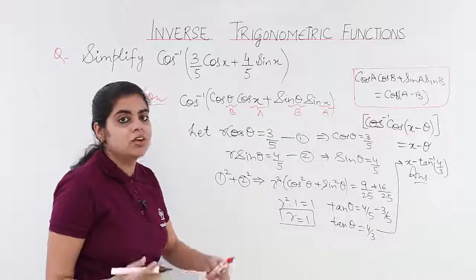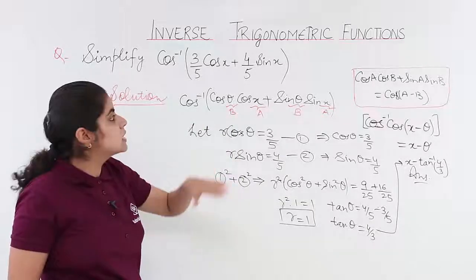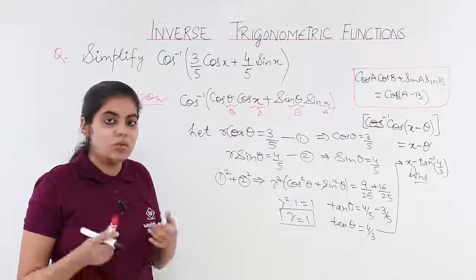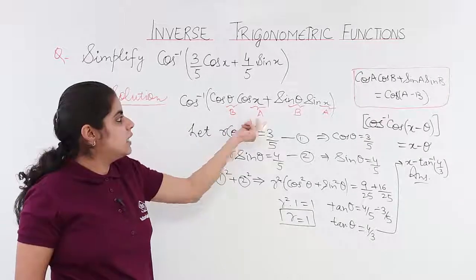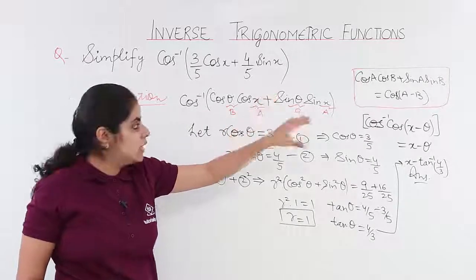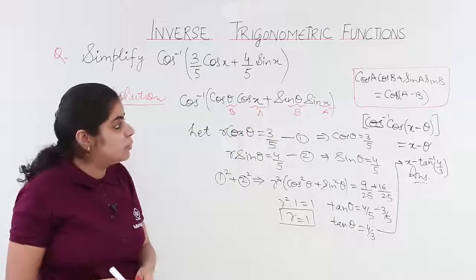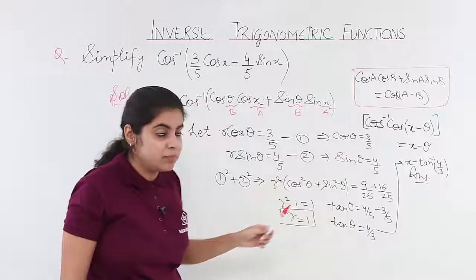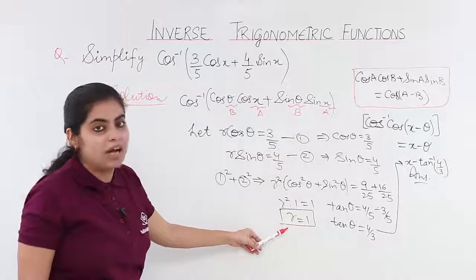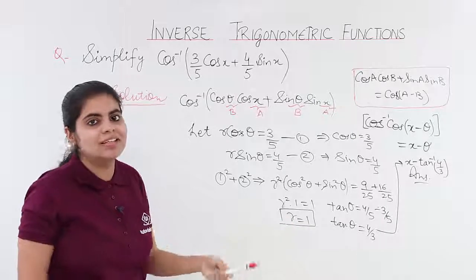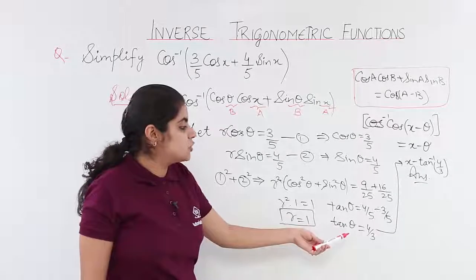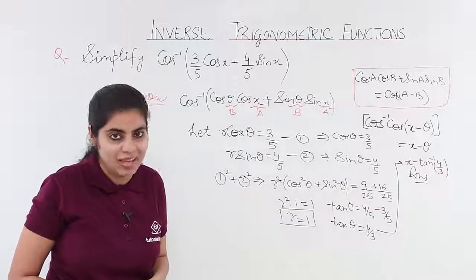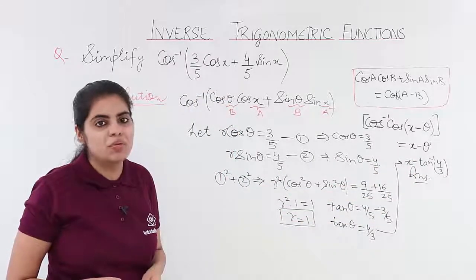Let's recap. The question was a simplification problem based on cos x and sin x. We identified cos a, cos b, sin a, sin b and used the formula cos a · cos b + sin a · sin b = cos(a − b). We found r = 1, which didn't cause any problem. We substituted the values, obtained tan θ = 4/3, and the final answer is x − θ = x − tan inverse(4/3).